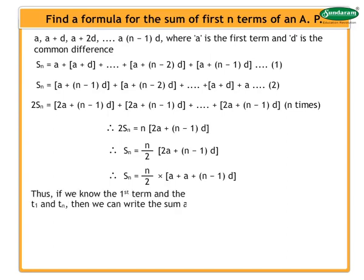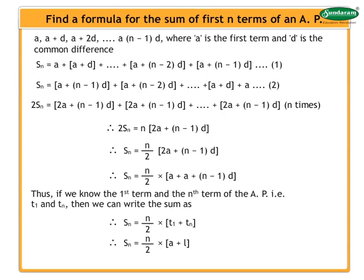We have thus, if we know the first term and the nth term of the AP, that is T1 and Tn, then we can write the sum as Sn equals n/2 into [T1 + Tn]. Therefore, Sn equals n/2 into [A + L], where A is the first term and L is the last term.